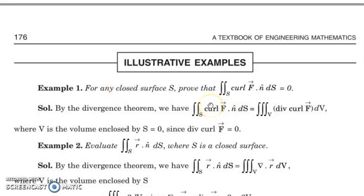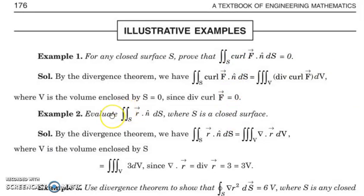So for any closed surface S, when you evaluate the double integral over S of curl F · N dS, that will be equal to 0. The next question is: evaluate the double integral over S of R · N dS, where S is a closed surface and R is the vector xi + yj + zk. The divergence of R: the first component is x, second is y, third is z, so the divergence of R is equal to 3.